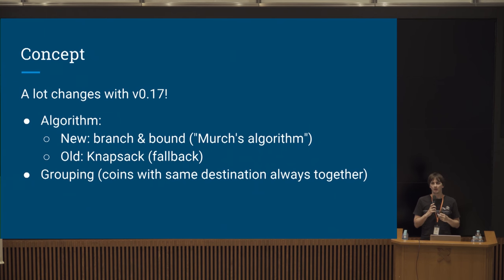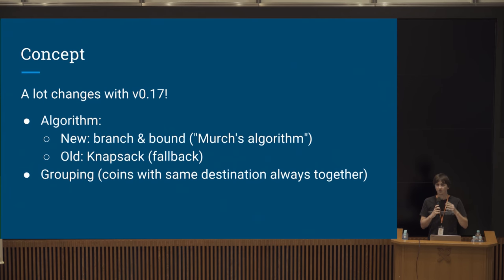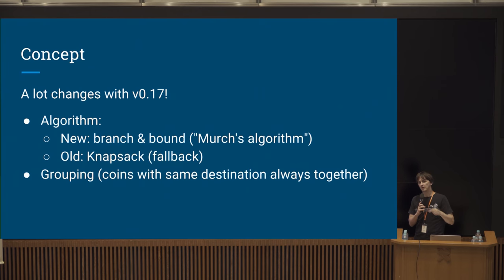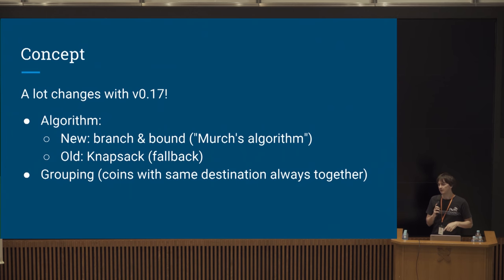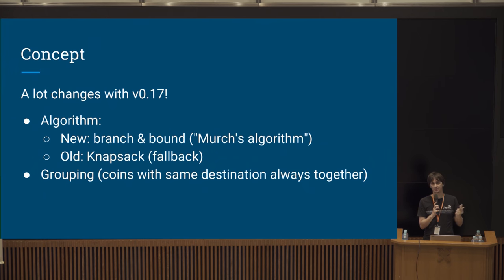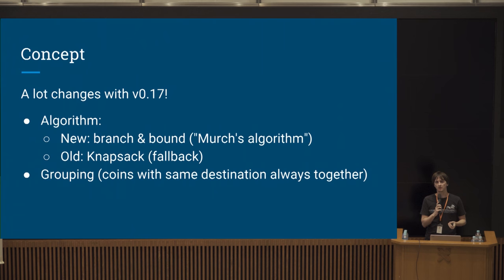There's also a feature where coins with the same destination address are grouped together — an optional feature you can turn on and probably should. If someone sends you money to the same address more than once, spending those UTXOs separately reveals that they belong to the same person, since observers see the same public key used twice. The grouping feature ensures you always spend such coins together or not at all, and in 0.17 it does this automatically.